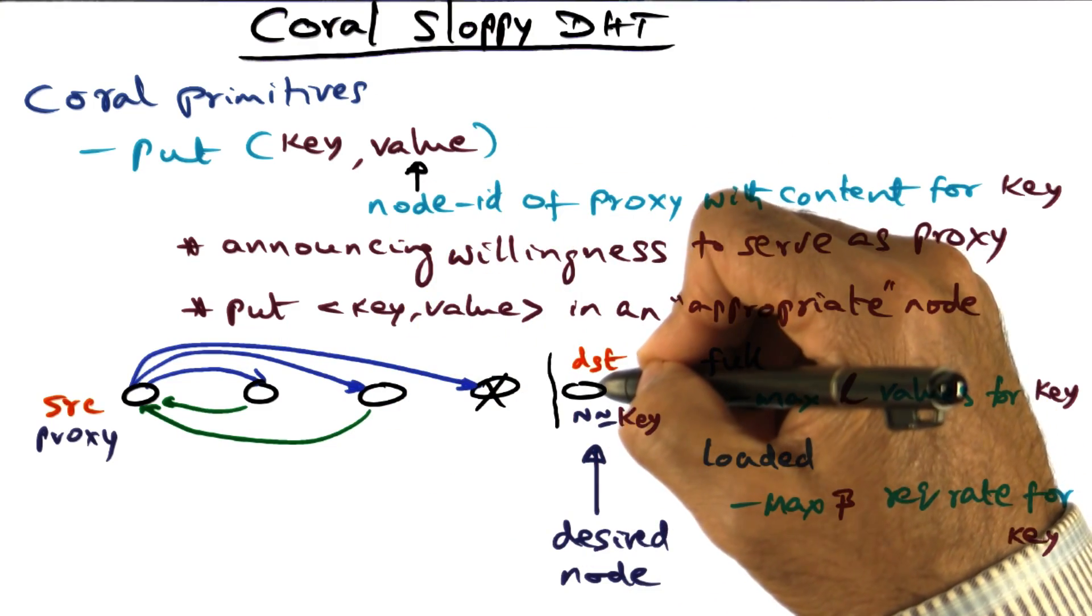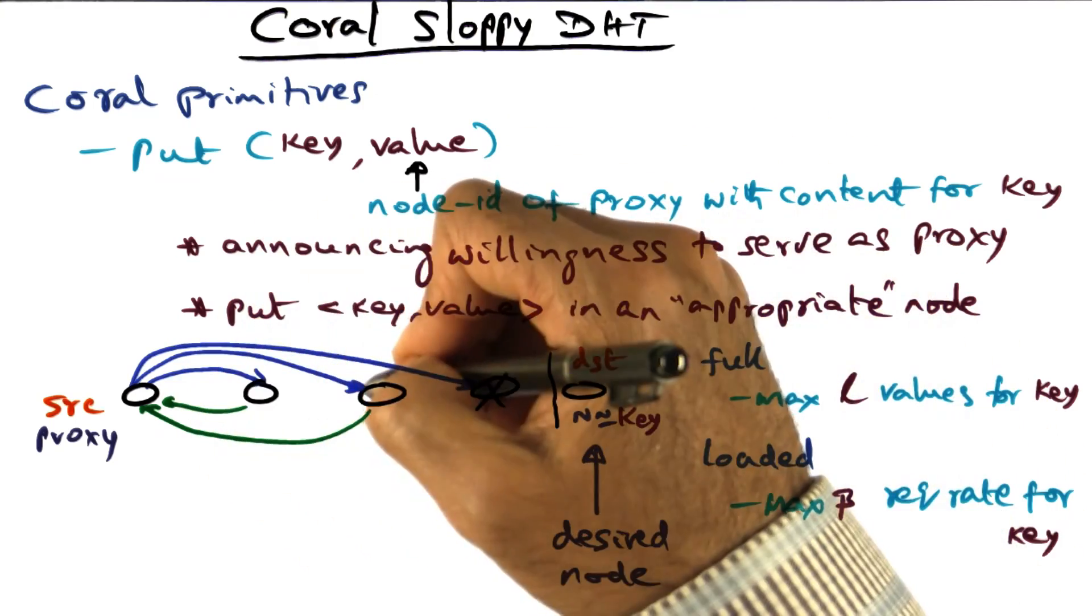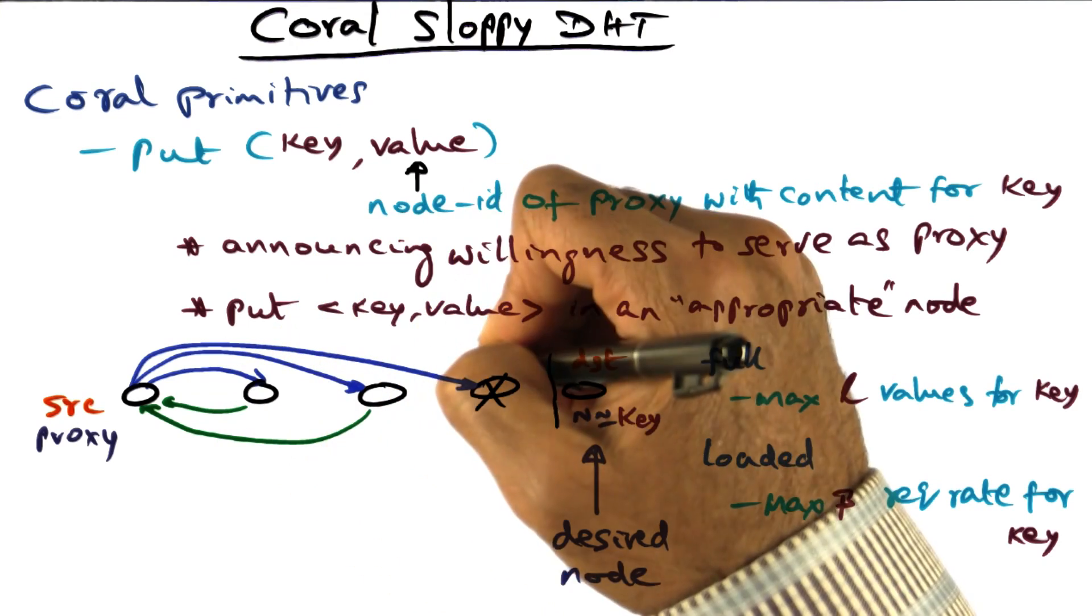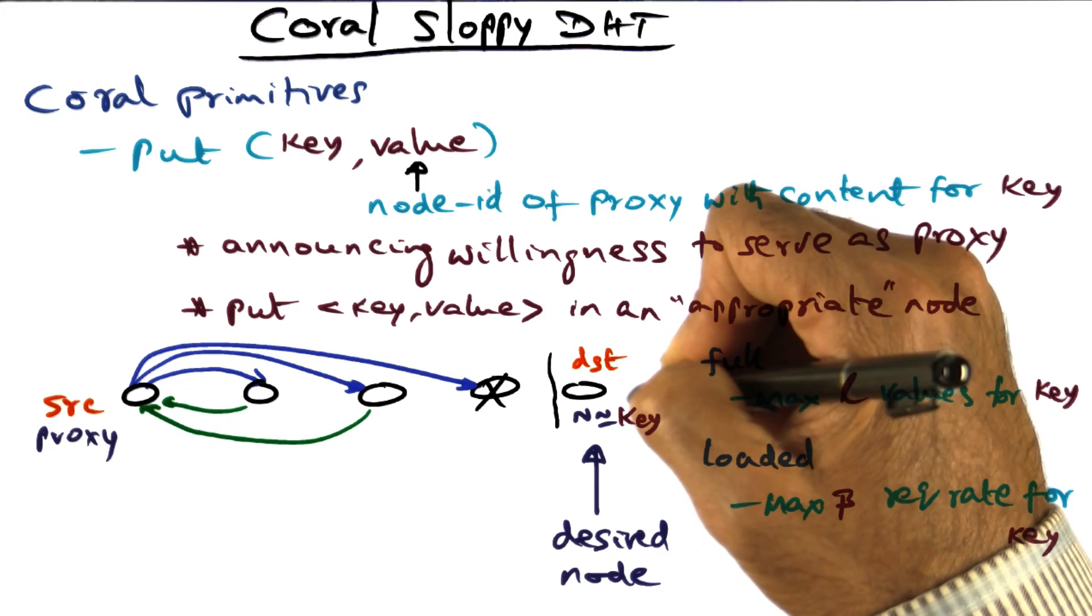So I'm going to go to a node that is half the distance to the desired destination. So the desired destination is n. I'll go to a node that is half the distance, say n over two, n over four and so on till I get to the desired destination.